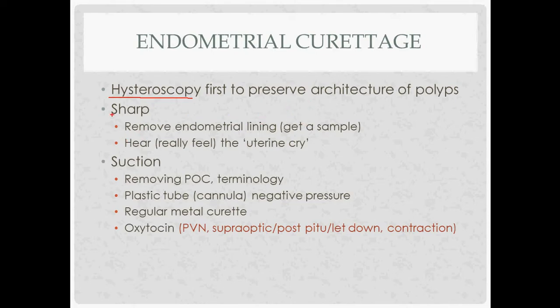There are two main types of curettage. Sharp curettage, like the device shown, is used to remove the endometrial lining — you scrape all around the uterus trying to get the entire endometrial lining off. You continue scraping until you hear the 'uterine cry,' which is really a gritty sensation you feel after you've scraped off a sufficient amount of endometrium.